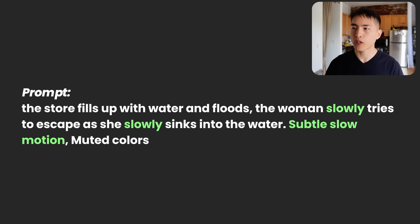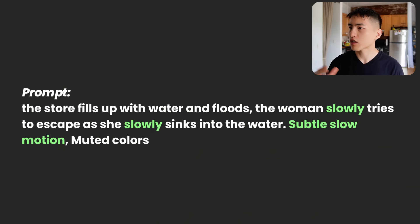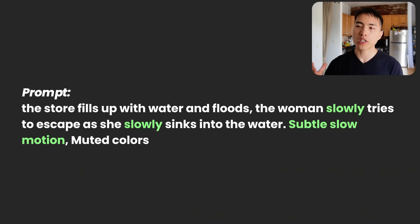Sometimes you need to slow things down inside the prompts. If we add the keyword 'slow' to multiple parts of the prompt, it should create much smoother movement. So I told the AI: 'the store fills up with water and floods; the woman slowly tries to escape as she slowly sinks into the water; subtle motion; muted colors.' If we create the visual effect using this prompt, it gives us much smoother movement.